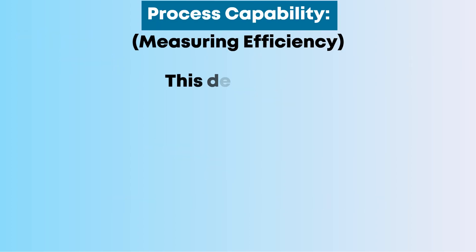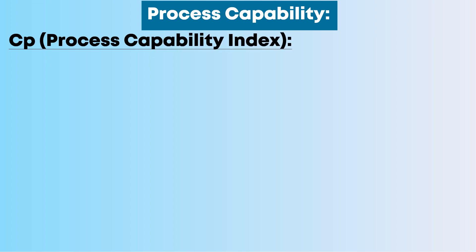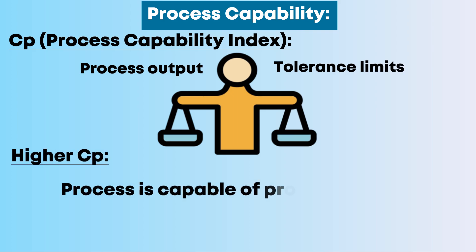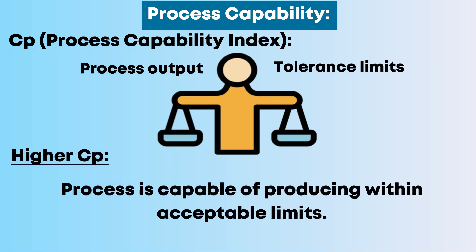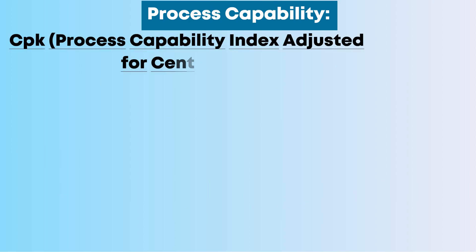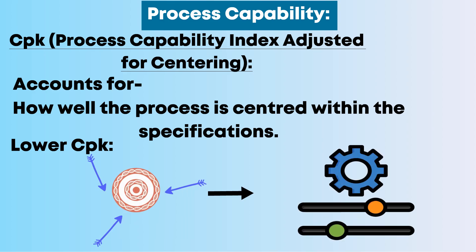Process Capability — Measuring Efficiency: This determines how well a process meets set specifications. Two key measures are: CP (Process Capability Index), which compares the spread of the process output to the tolerance limits — a higher CP means the process is capable of producing within acceptable limits; and CPK (Process Capability Index Adjusted for Centering), which accounts for how well the process is centered within specifications. A lower CPK indicates the process may be off-target and needs adjustments.